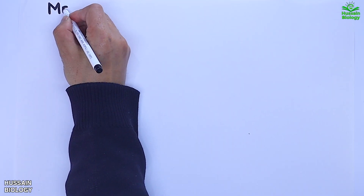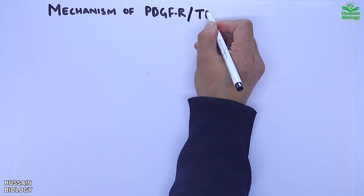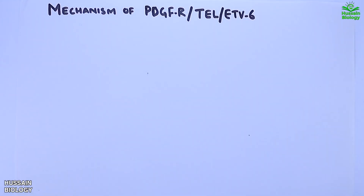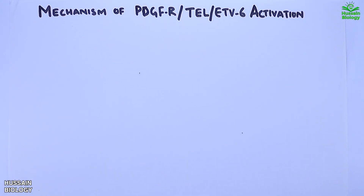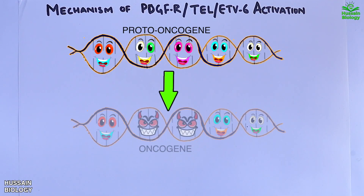In this video we will be discussing the mechanism of PDGFR-TEL-ETV6 activation. Basically, we get the transformation of a proto-oncogene into an oncogene from this mechanism.